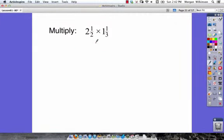Here we have 2 and a half times 1 and 1 third. So 2 and a half: 2 times 2 is 4, plus 1 is 5. With step one, changing to improper fractions, we get 5 halves times, remember the dot means to multiply, 1 and 1 third. Well, 1 times 3 is 3, plus 1 more is 4, so we get 4 thirds.